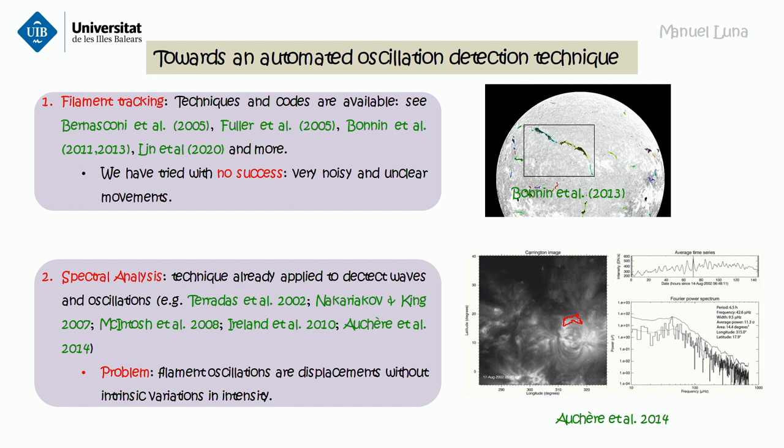We want to expand this catalog from only six months to a larger dataset, and also without any bias associated with the observer. We tested filament tracking — it's something similar to segmentation, but without machine learning. But we found that tracking the centroid of the filament or some characteristics of the filament is very noisy and hard to follow.